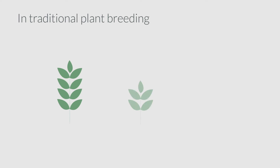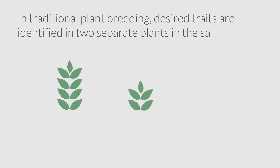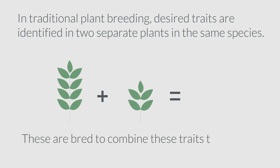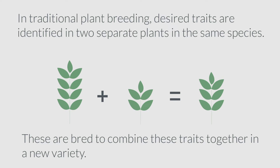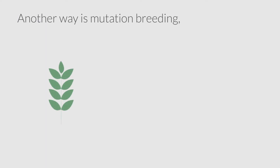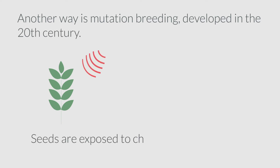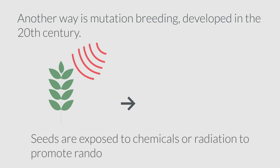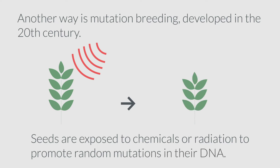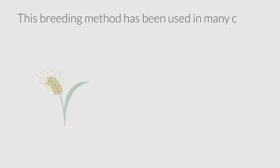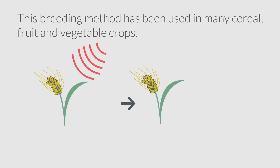In traditional plant breeding, desired traits are identified in two separate plants in the same species, and these are bred to combine those traits together in a new variety. Another way is mutation breeding, developed in the 20th century, where seeds are exposed to chemicals or radiation to promote random mutations in their DNA. This breeding method has been used in many cereal, fruit and vegetable crops.